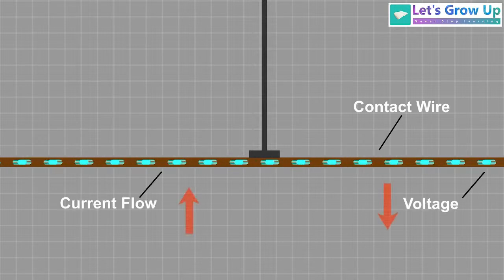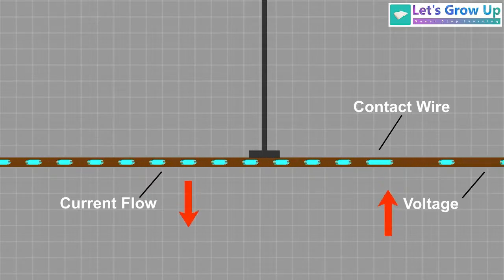As we know, when current flow increases, the voltage decreases, and when voltage increases, the current flow decreases.